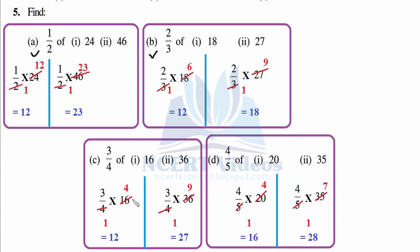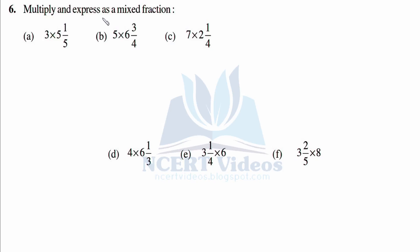Part C: three by four of sixteen — one four is four, four four is sixteen, four times three is twelve. Three by four of thirty-six — one four is four, nine four is thirty-six, nine times three is twenty-seven. Part D: four by five of twenty — one five is five, four five is twenty, four times four is sixteen. Four by five of thirty-five — one five is five, seven five is thirty-five, seven times four is twenty-eight.